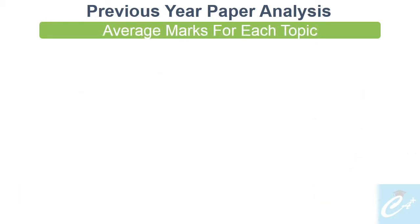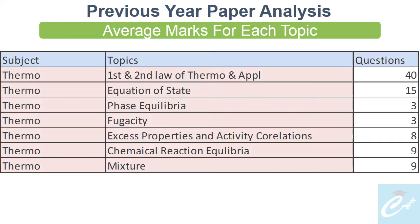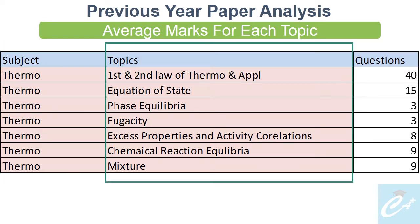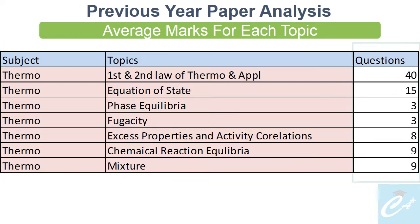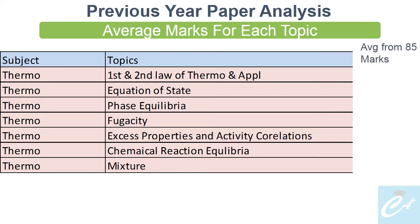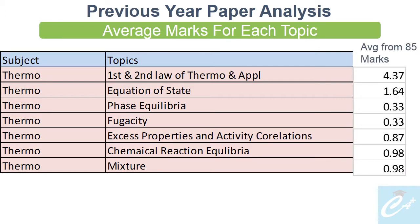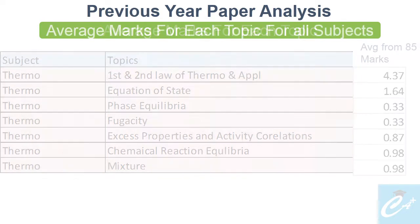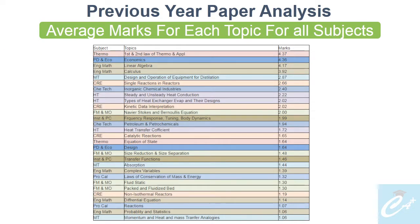Once you know the subjects' weightage, you will see which topics are important within these subjects. In this list, the first column is the subject, the second column is the topics in that subject, and the third column is the total questions asked on those topics. If we use this data and convert it into average marks per topic out of 85 marks, and arrange these topics from highest to lowest, you will find the list of most to least important topics.